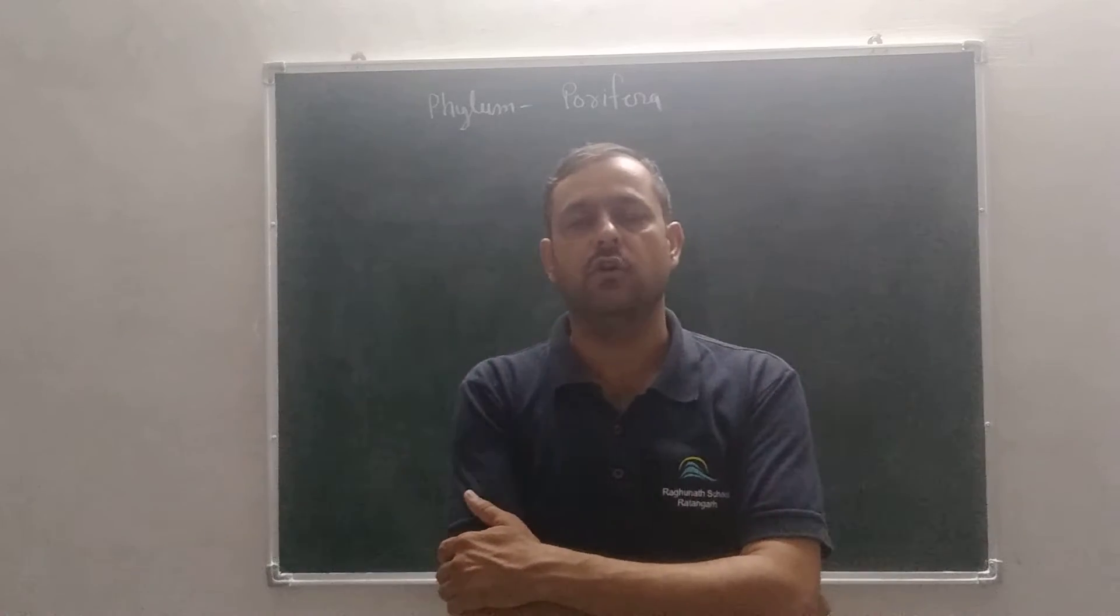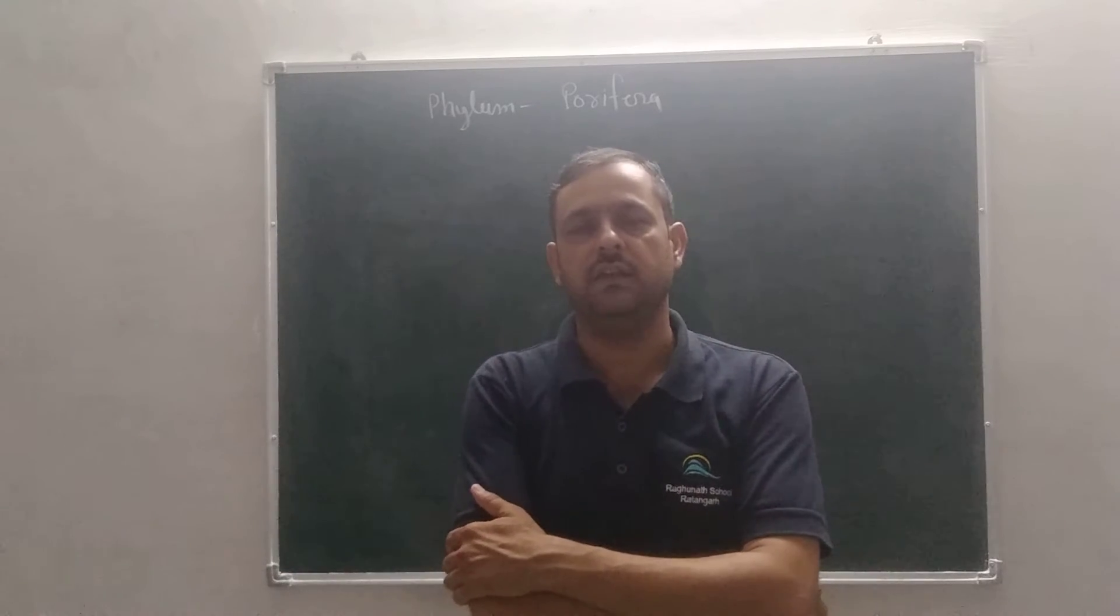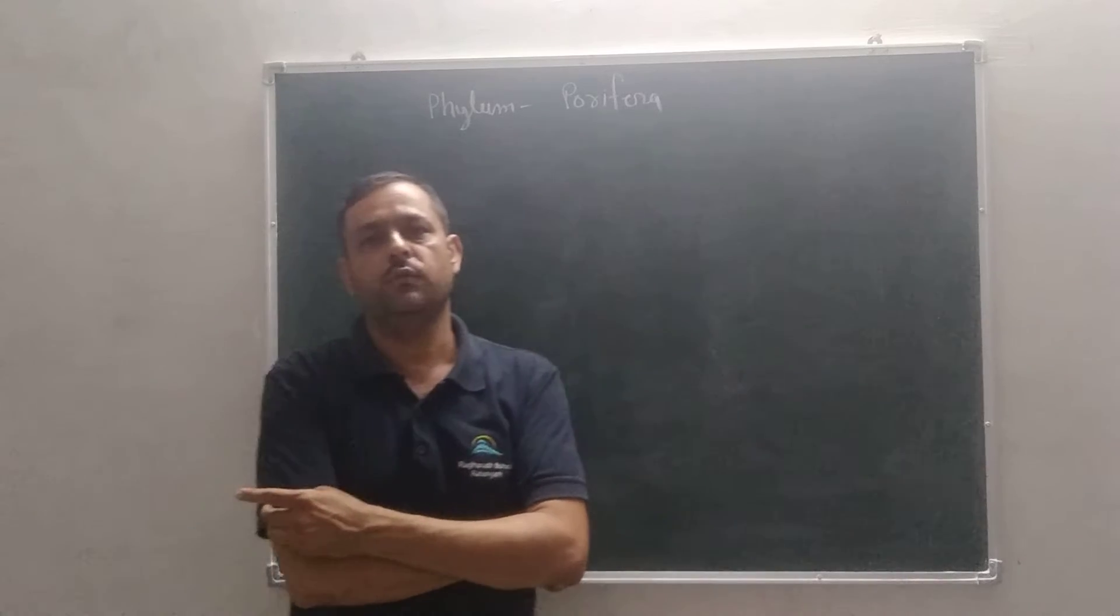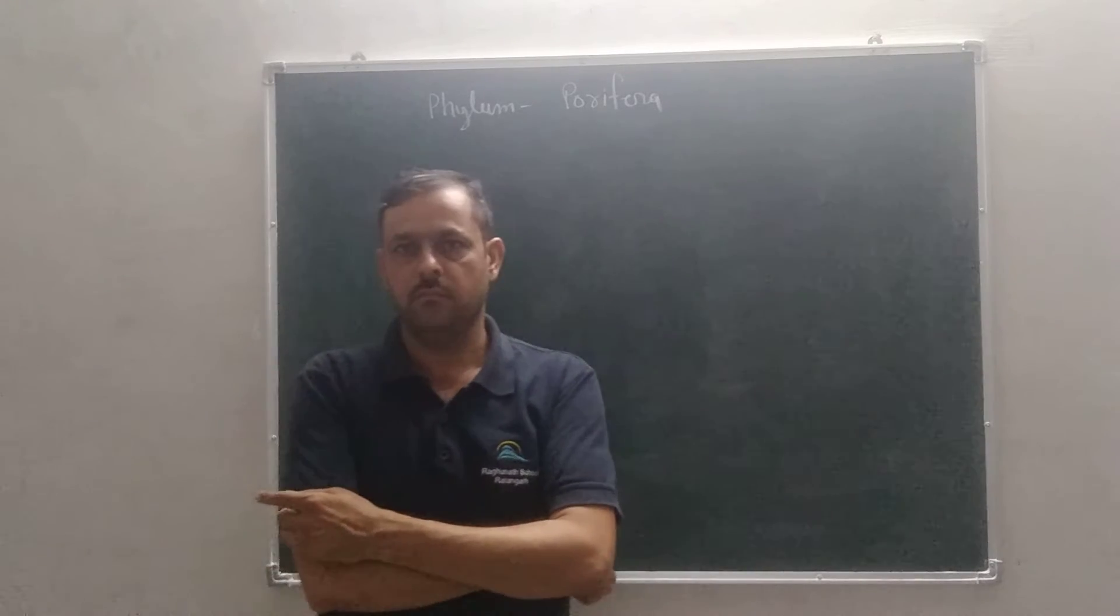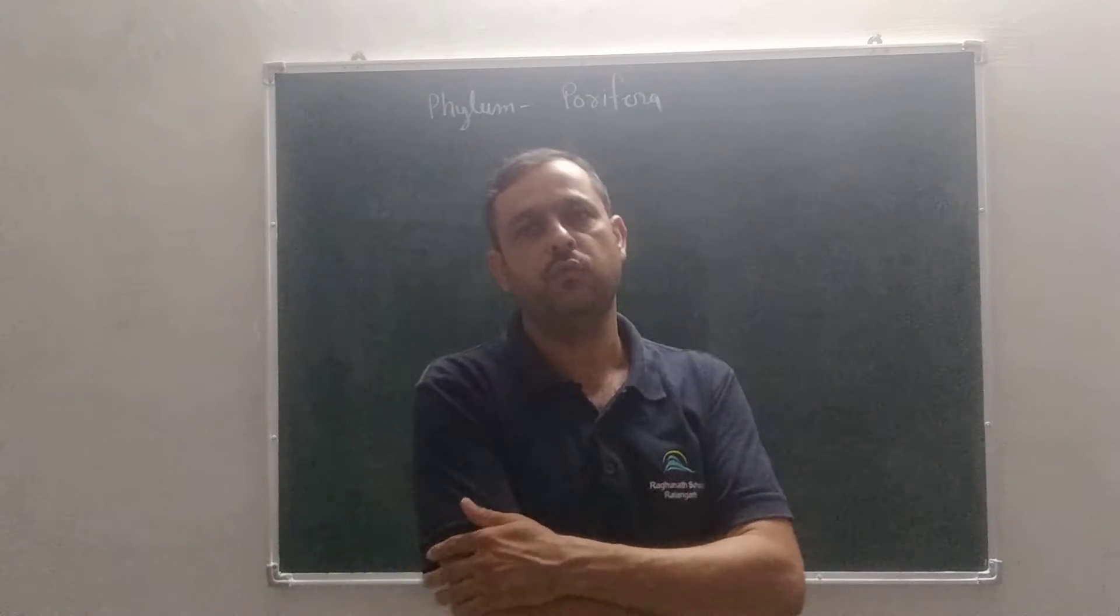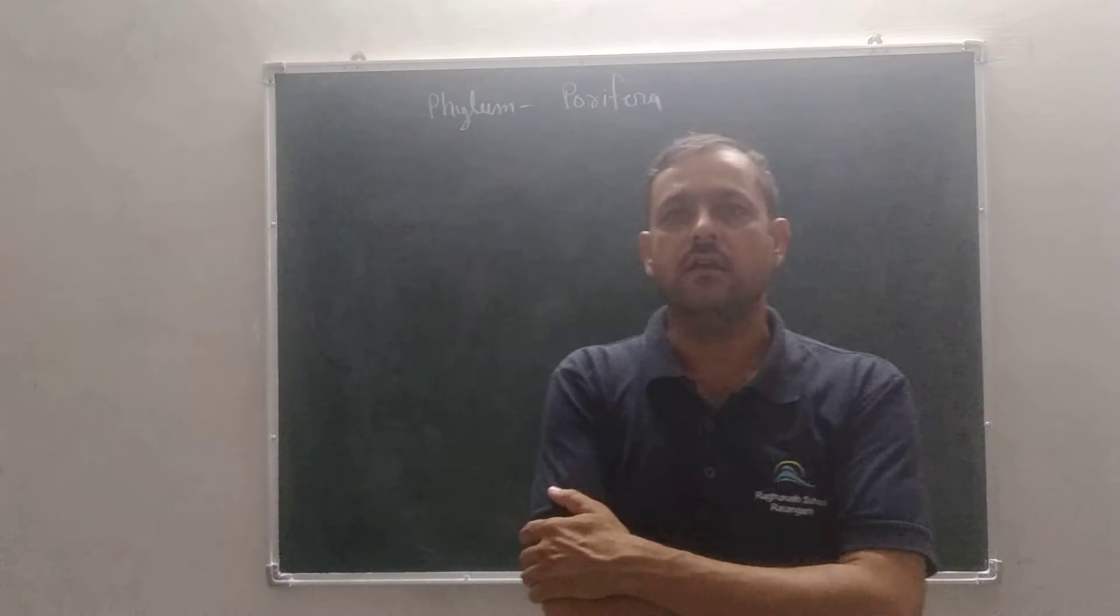We take and classify all the living organisms in five categories. First, Monera. Second, Protista. Third, Fungi. Fourth, Plantae. And fifth, Animalia. We are studying our fourth chapter, Animal Kingdom.